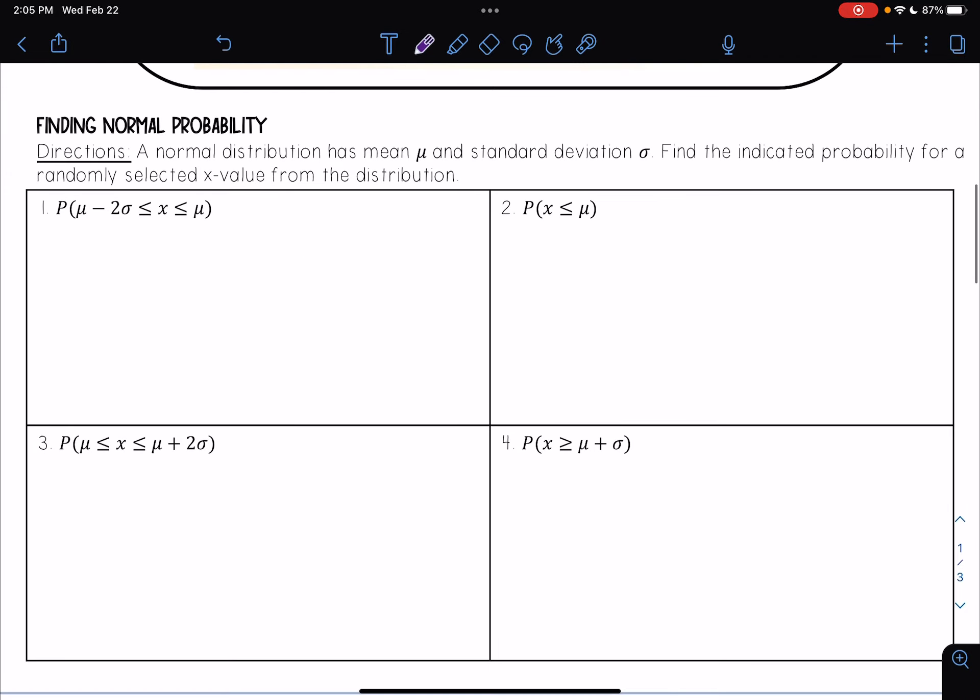So first, let's practice finding normal probability. So it says a normal distribution has mean μ and standard deviation σ. Find the indicated probability for a randomly selected x value from the distribution.